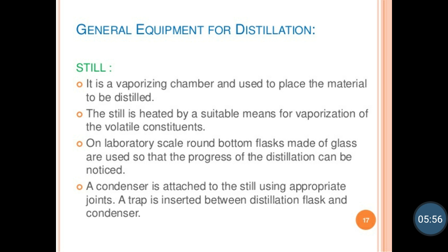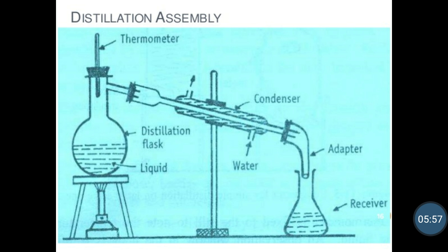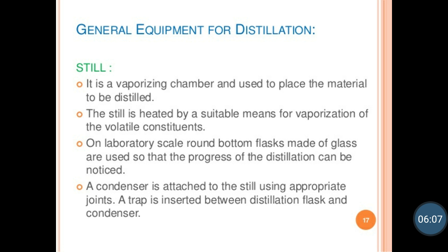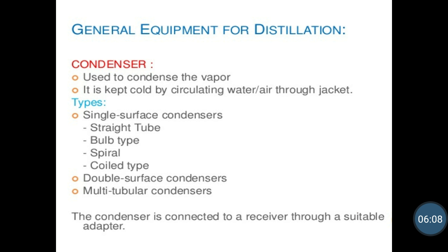A condenser is attached to the still using appropriate joints, and a trap is inserted between the distillation flask and the condenser. The condenser is used to condense the vapor, and it is kept cooled by circulating water or air through the jacket.